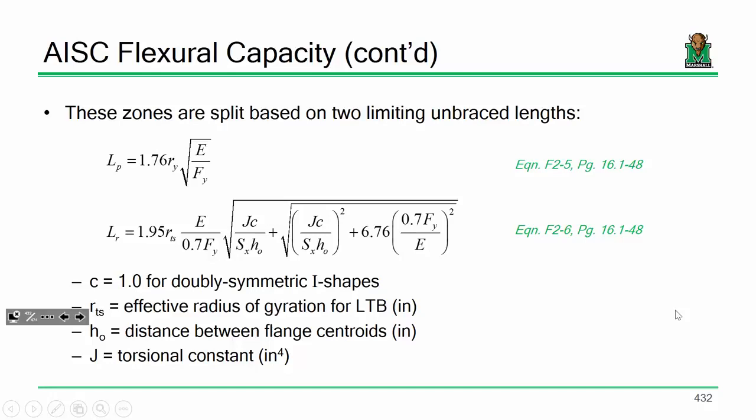Speaking of some equations, L sub P and L sub R, again, are the unbraced length limits that tell you whether or not you're in zone one, zone two, or zone three. Sometimes they're called LTB anchor points. LTB for lateral torsional buckling. Sometimes they're called anchor points.